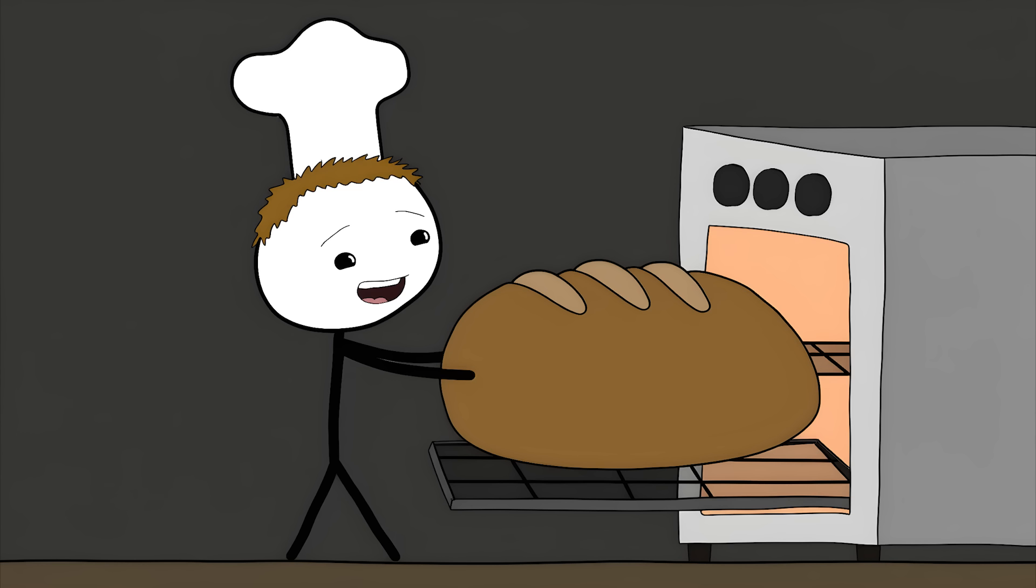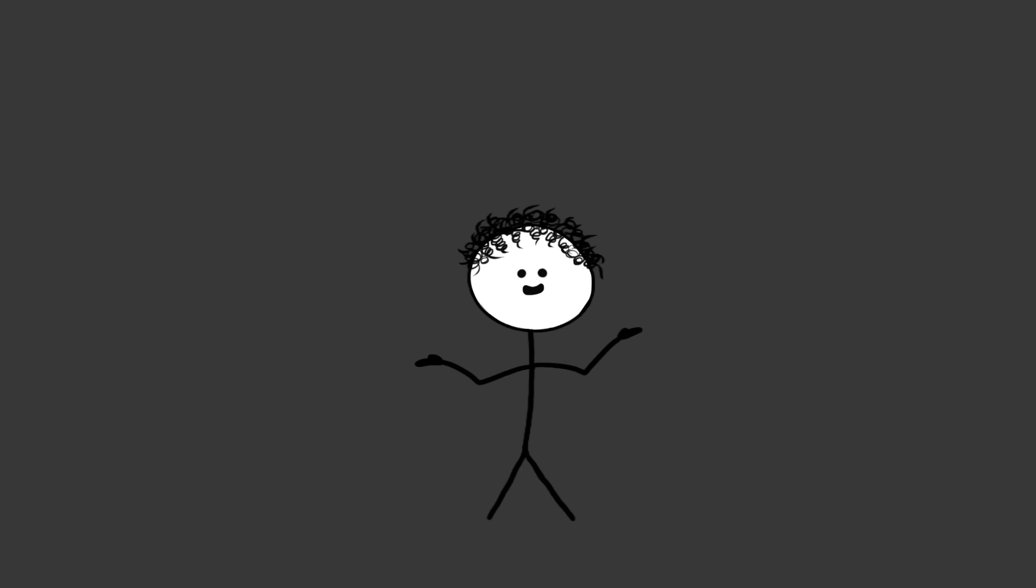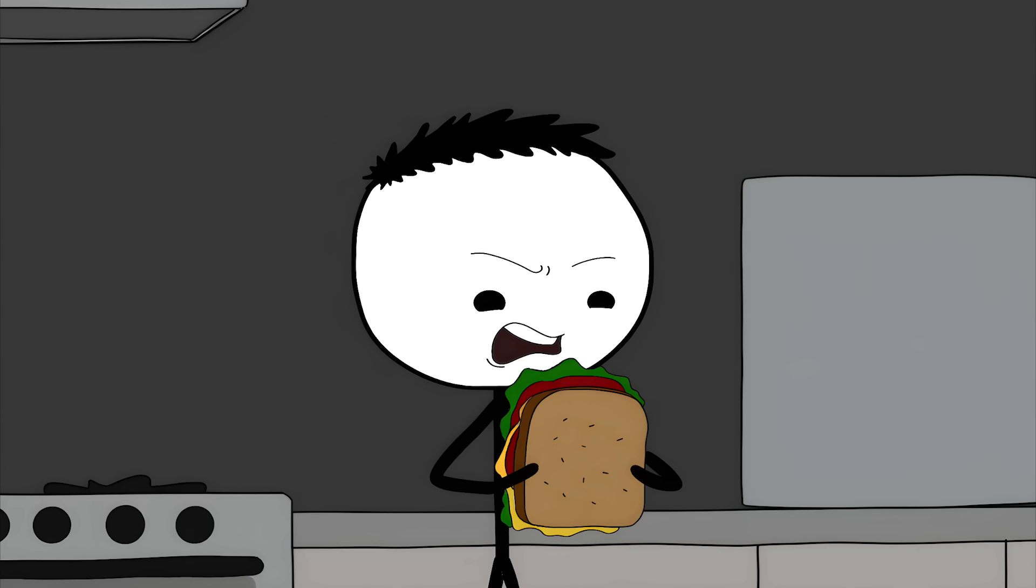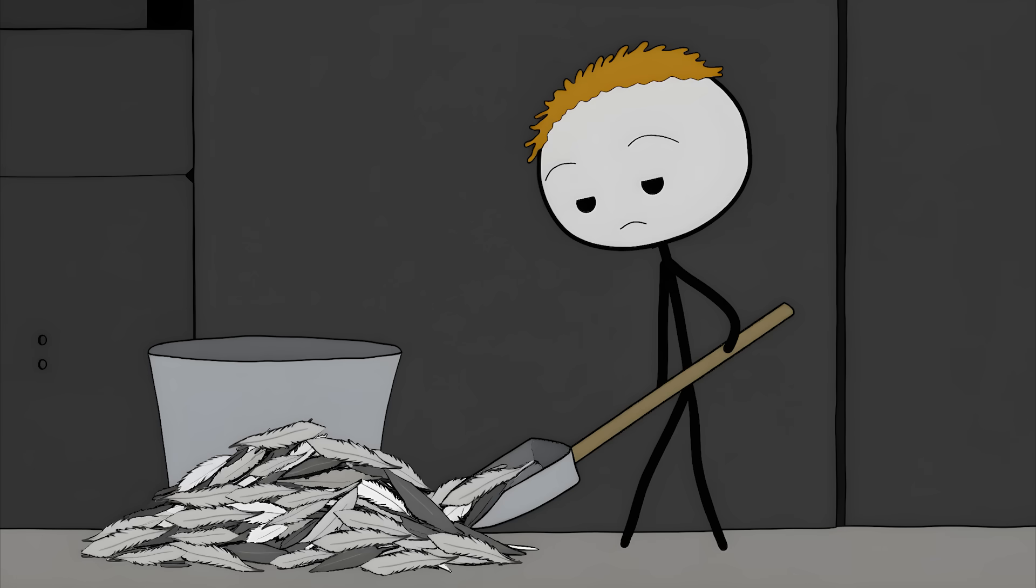It breaks down the gluten, speeding up processing time and making the bread fluffier. Want to know where they get all this human hair? Mostly from hair salons and barber shops in China. Those clippings from someone's haircut could have ended up in dough for a sandwich. When they couldn't get enough human hair, they turned to duck feathers and pig bristles.